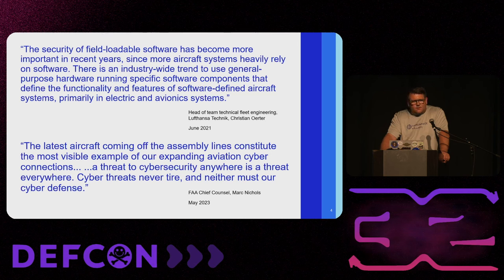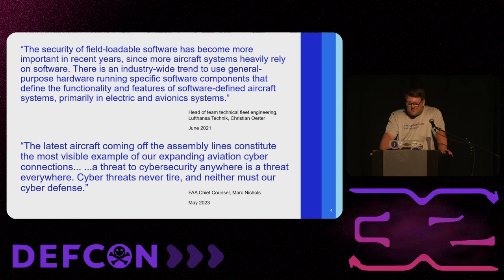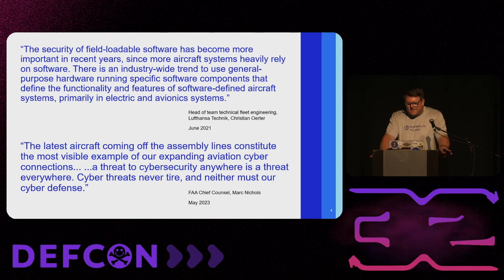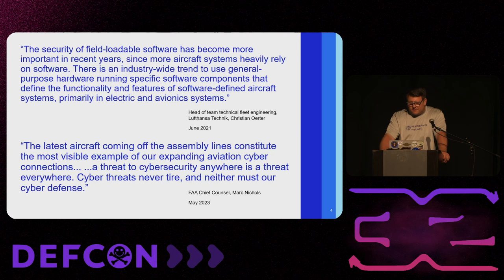And if you saw my talk at DEFCON 28 on the aircraft information systems domain, you might remember my favorite factoid: there are about 1,400 different software parts on a 787, including ones to control the bathrooms.